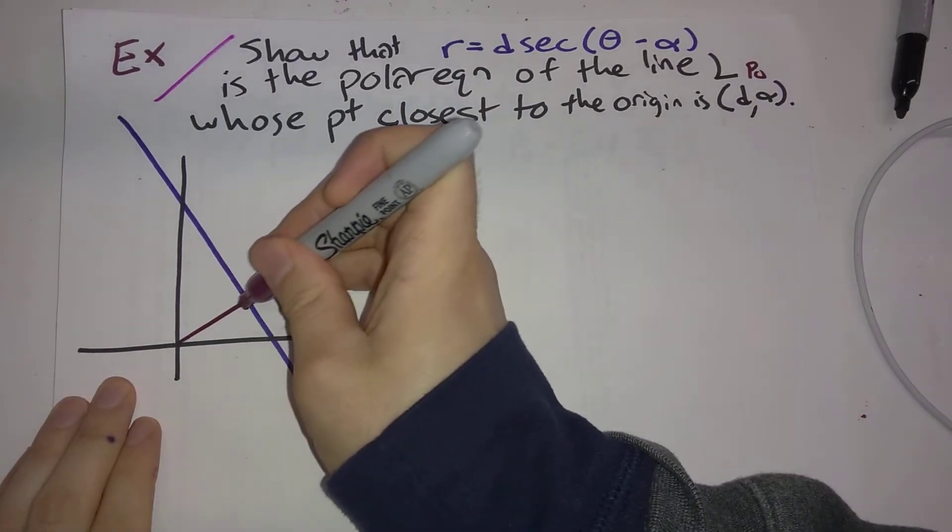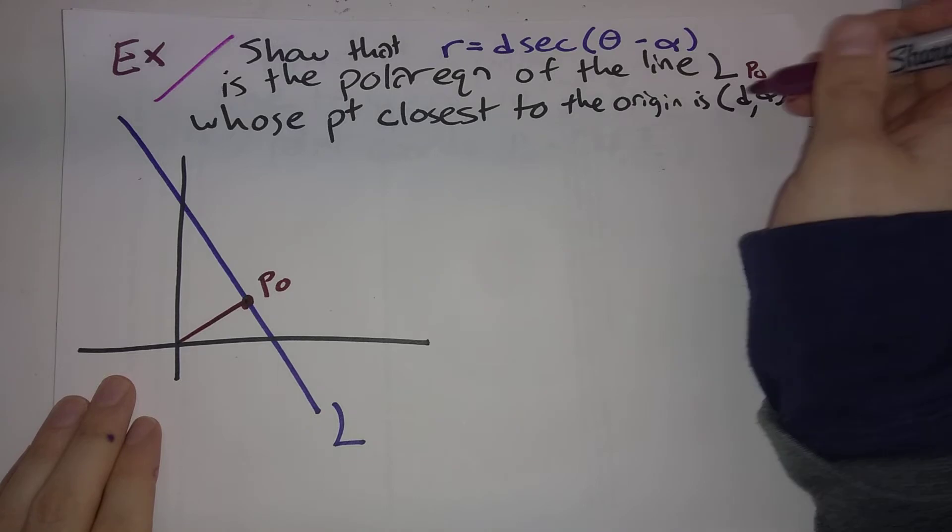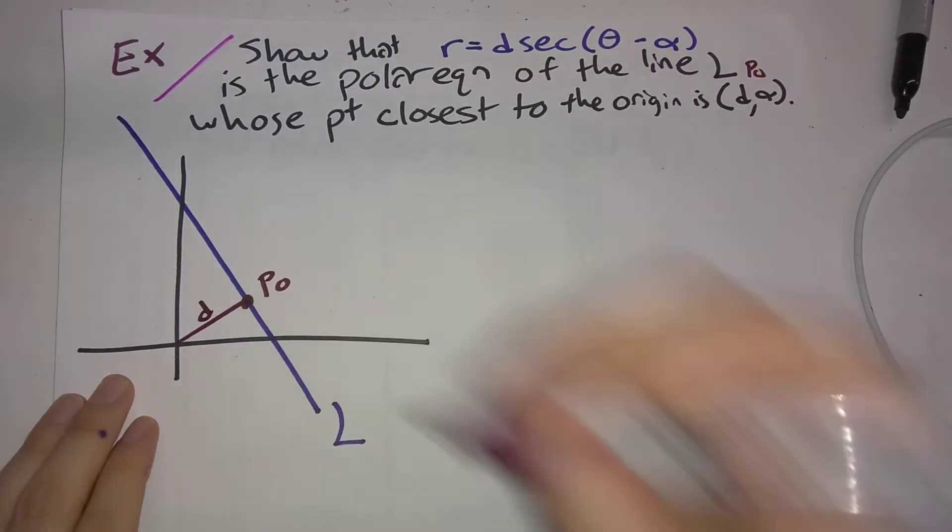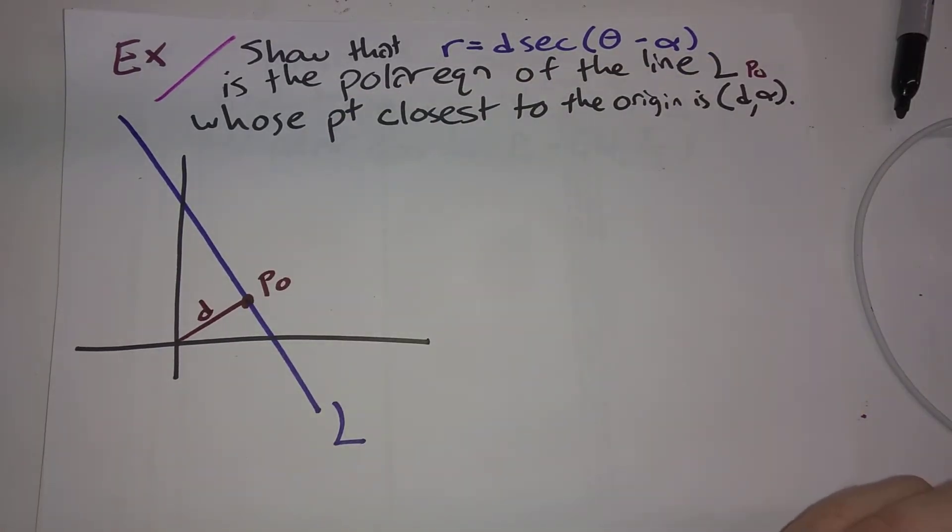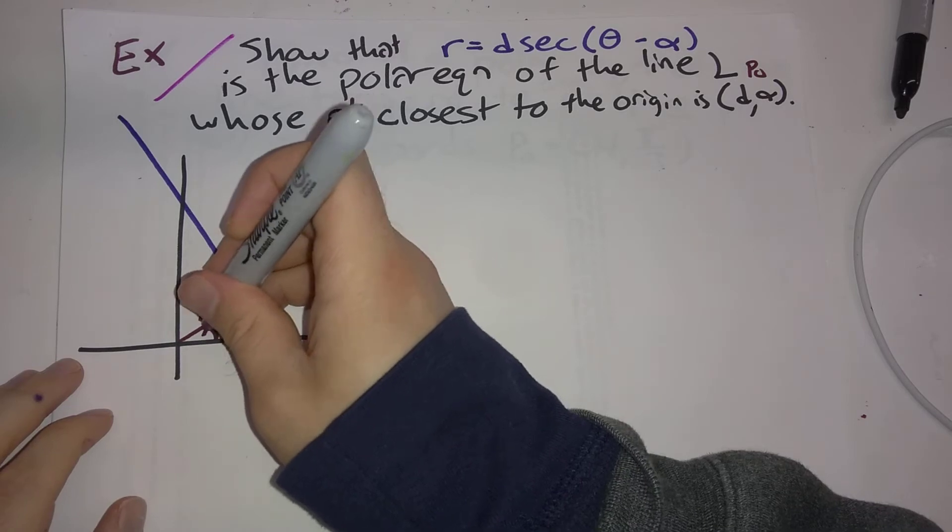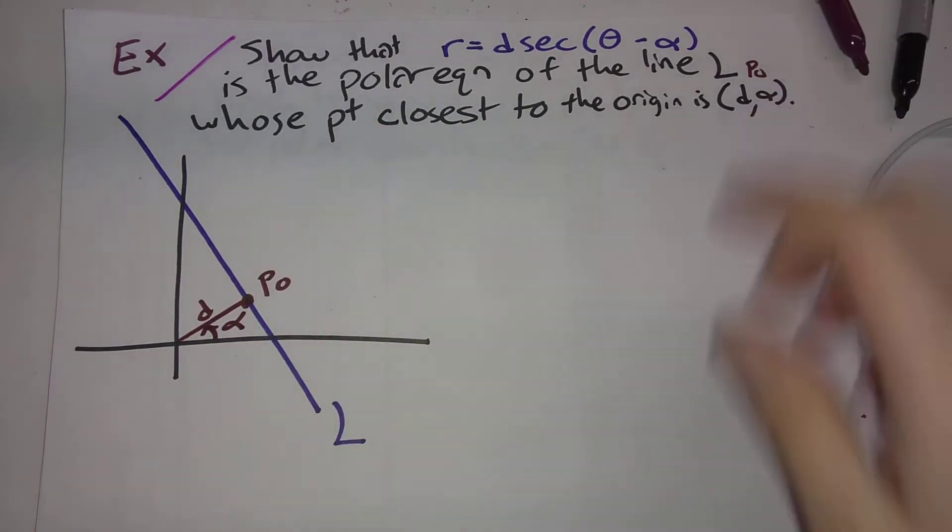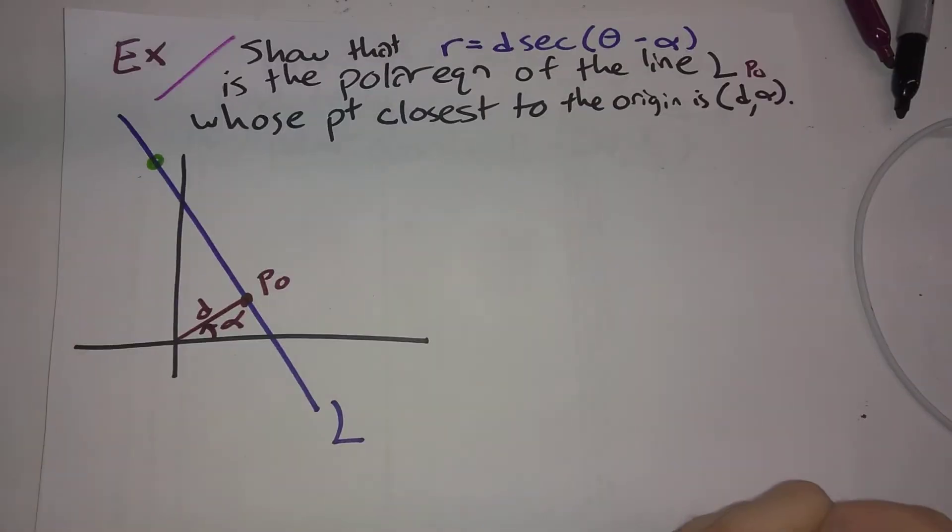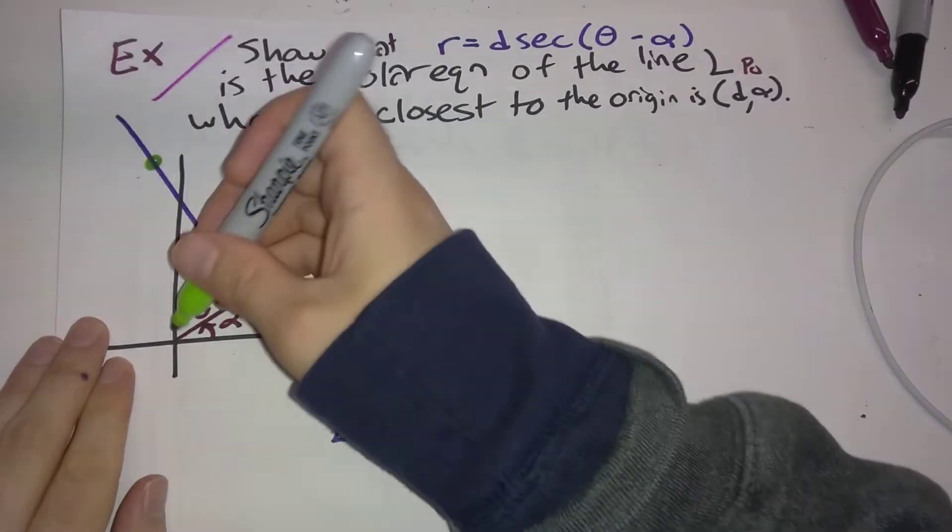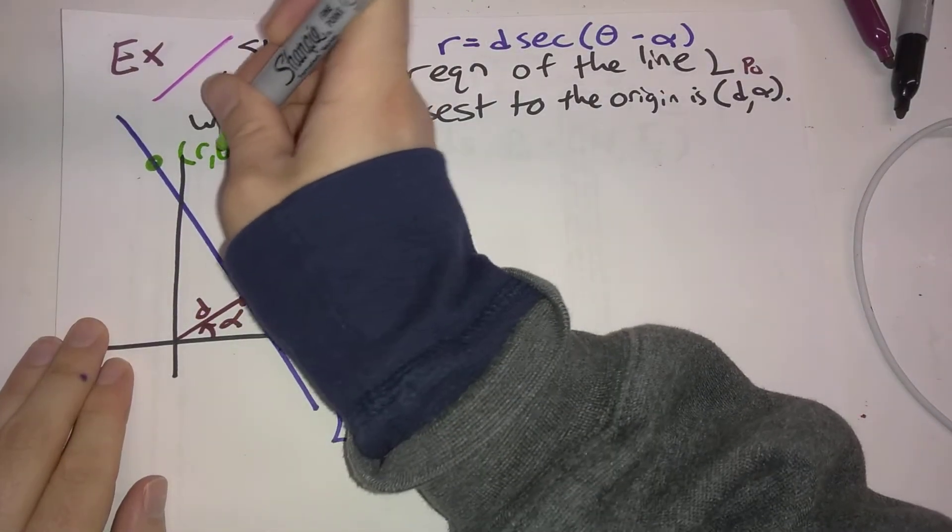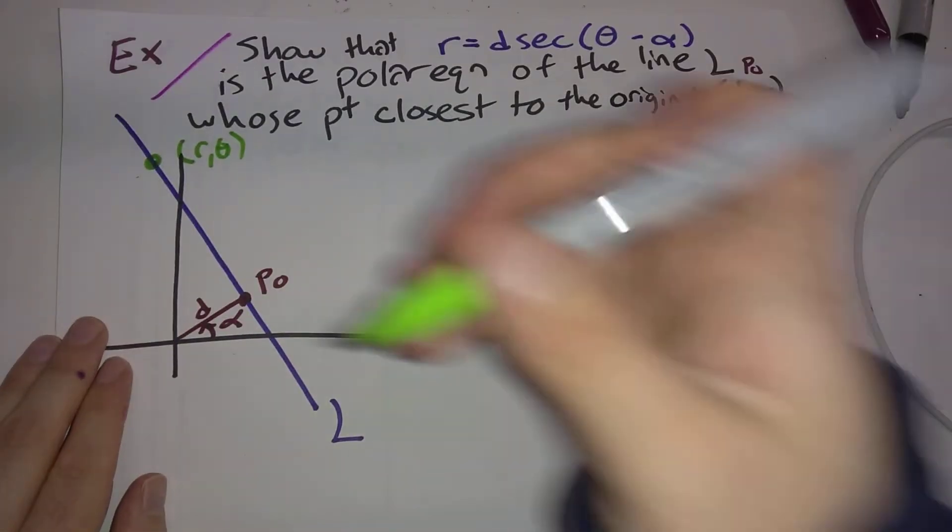And so right there, this is polar coordinates. So the distance P-naught is away from the origin is D. And this is angle alpha. Okay, let's take a generic point. Here's a generic point that's on our line. And let's say it has polar coordinates R theta.